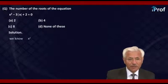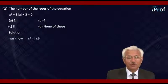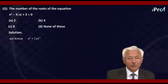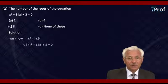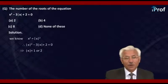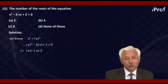We know that X squared is equal to modulus of X squared. Therefore, the given equation can be transformed into modulus of X squared minus 3 times mod X plus 2 equal to 0, which is a quadratic in mod X. That means mod X is equal to either 1 or 2.